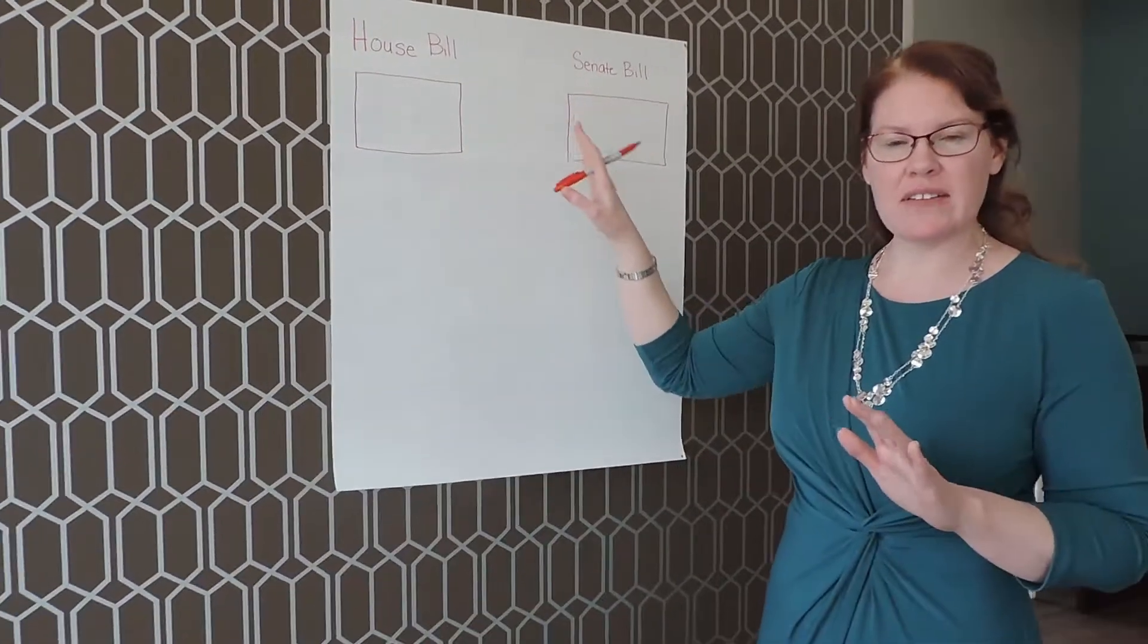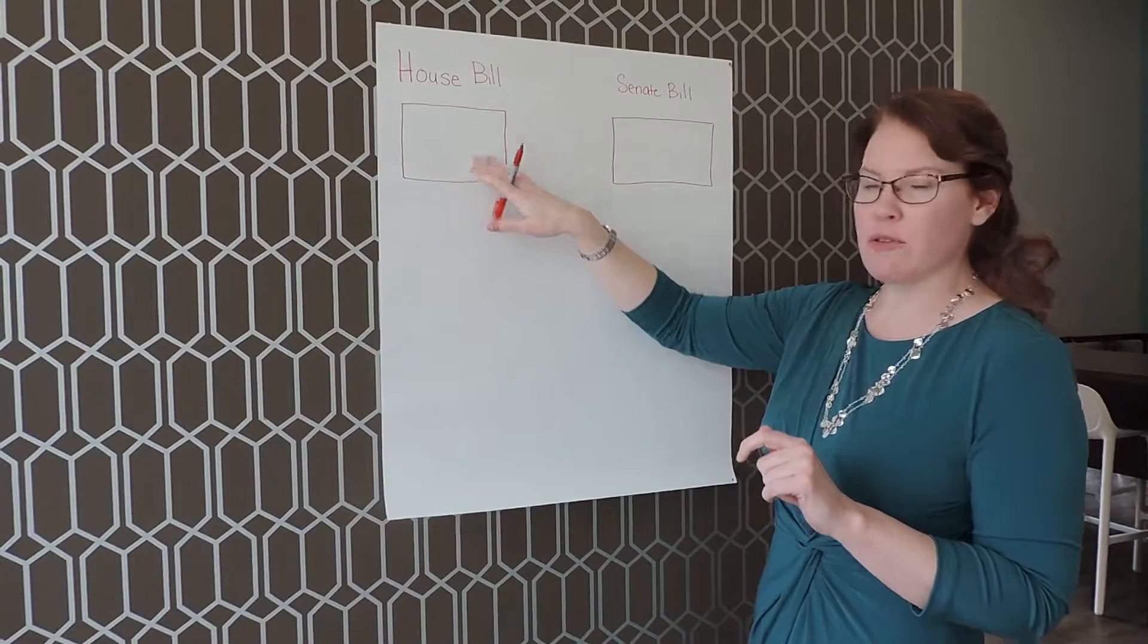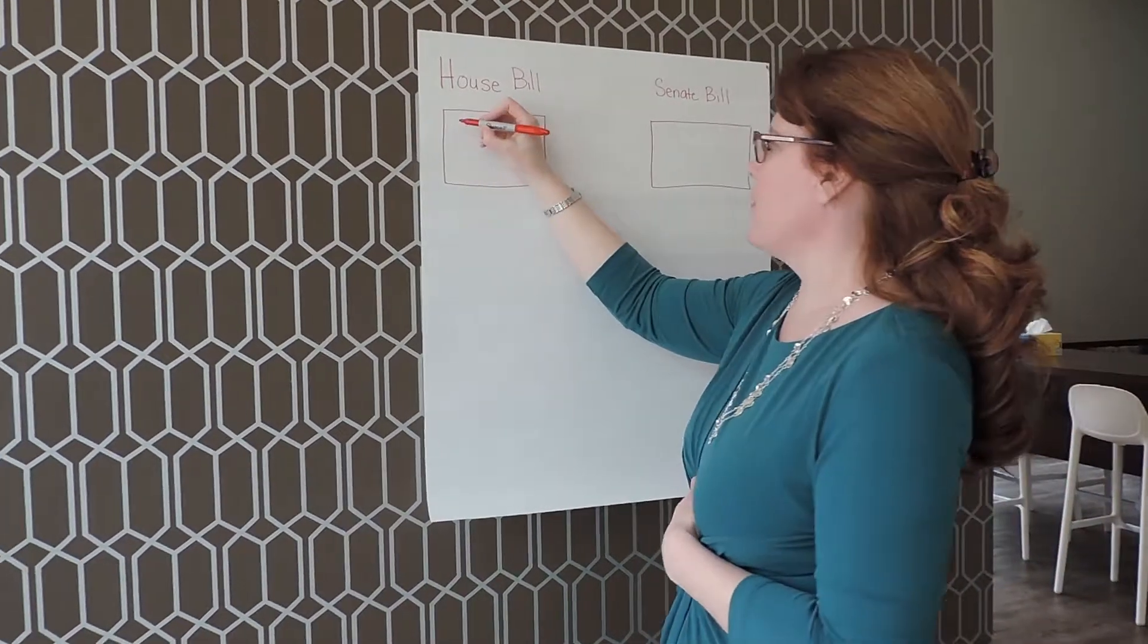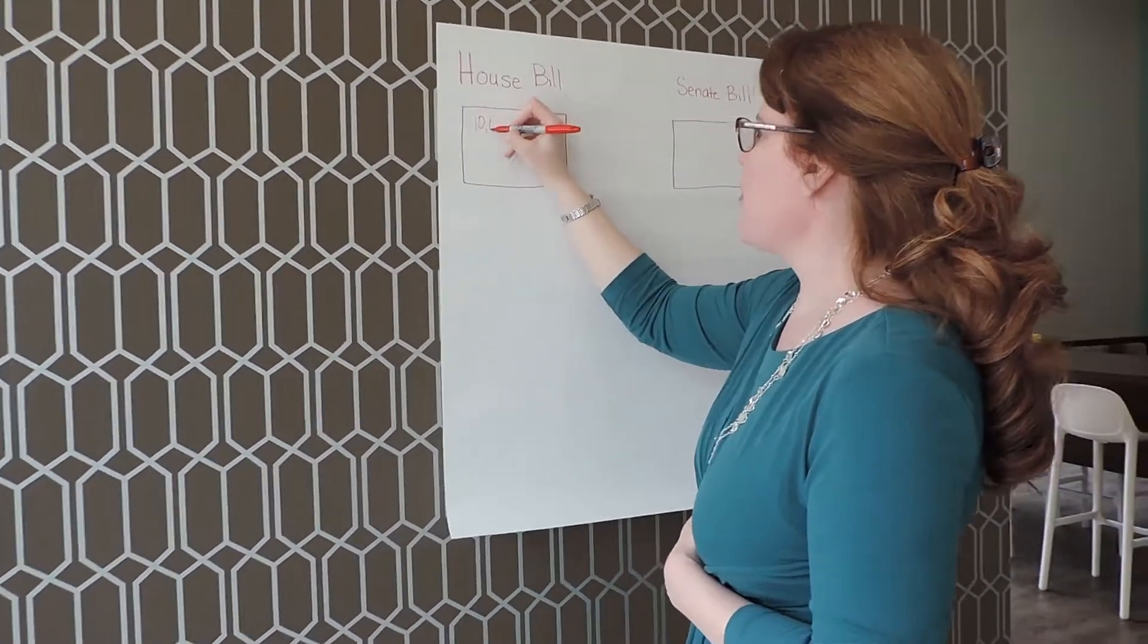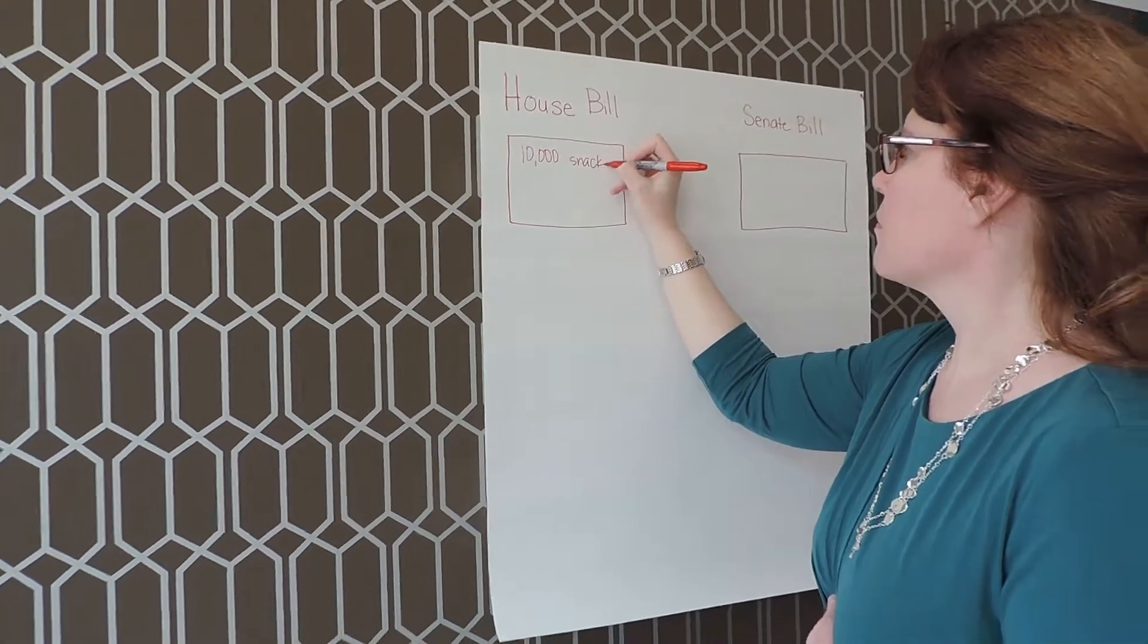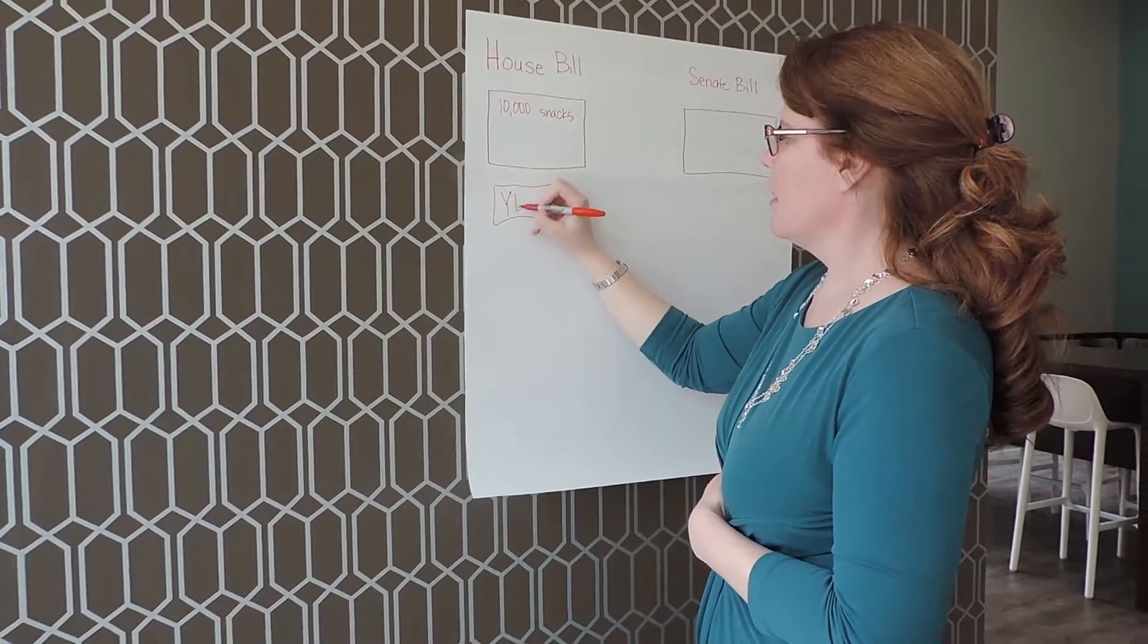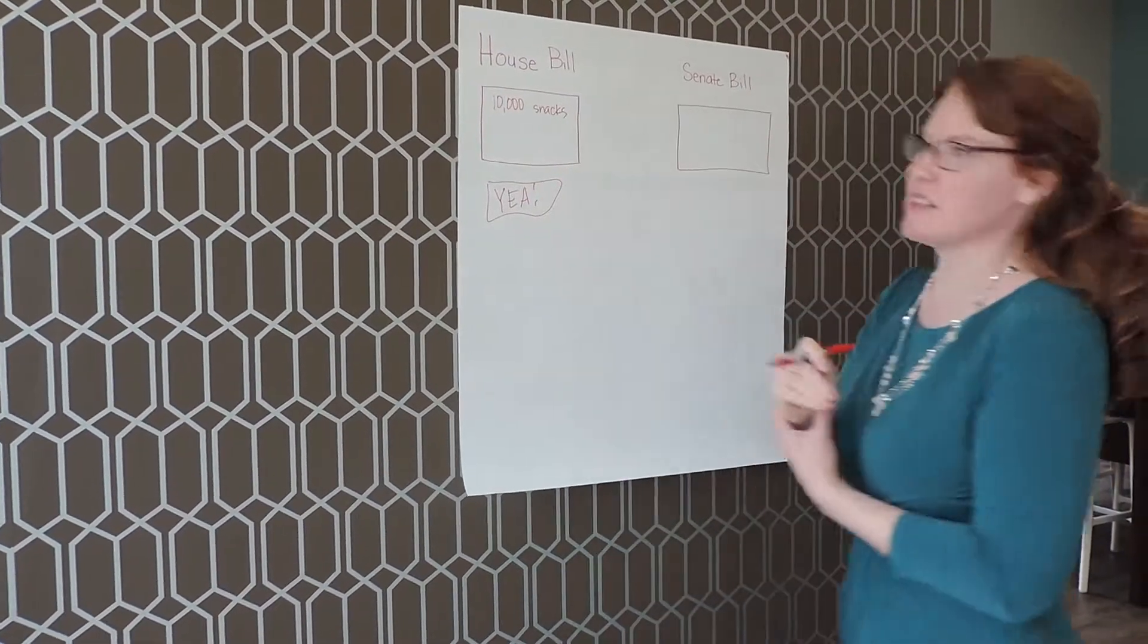So for instance, let's say the House and the Senate are talking about how much to spend on snacks. The House bill goes through the committee and they decide that they want to spend $10,000 on snacks. And that passes through the body. Yay! They said yes.